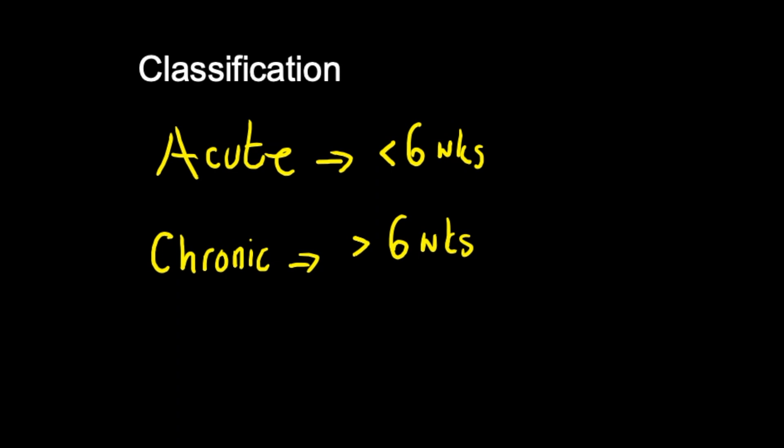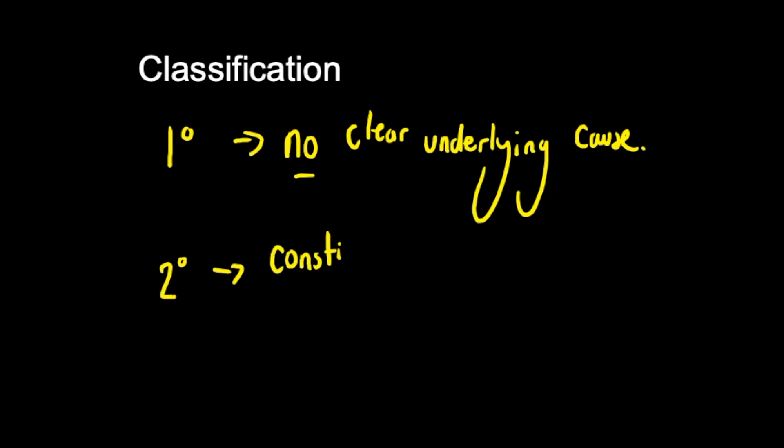The other classification system is based around the cause of the anal fissure, which can be divided into primary or secondary. A primary anal fissure is where there is no underlying cause. A secondary anal fissure is if there is a clear underlying cause. This can be constipation, inflammatory bowel disease, an STI or sexually transmitted infection, or colorectal cancer.